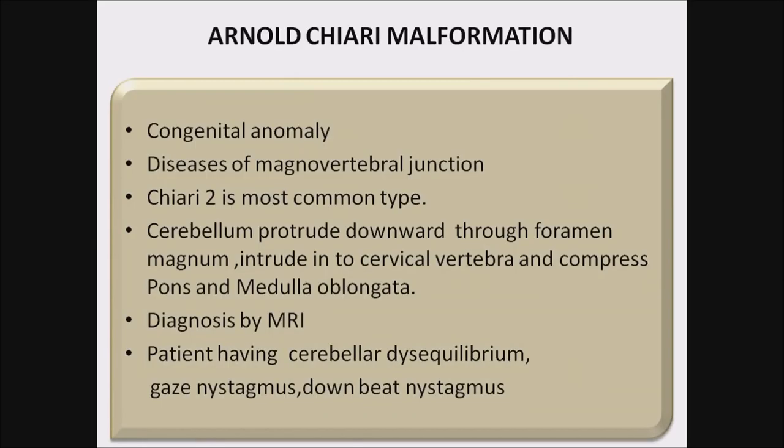Arnold-Chiari malformation: the most common congenital anomaly, a disease of the craniovertebral junction. Chiari type 2 is the most common type, where the cerebellum protrudes downward through the foramen magnum, intrudes into the cervical vertebra, and compresses the pons and medulla. Diagnosis is only by MRI. Patient presents with cerebellar disequilibrium, gaze nystagmus, and downbeating nystagmus — the most common finding in Arnold-Chiari malformation.